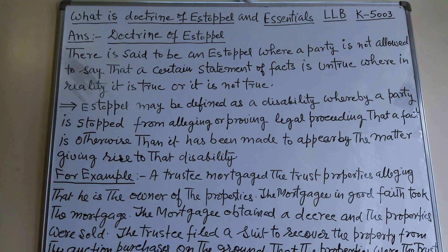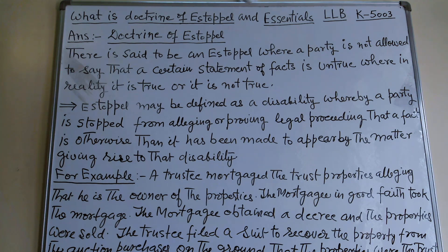The definition of the doctrine of Estoppel: there is said to be an Estoppel where a party is not allowed to say that a certain statement of fact is untrue. Estoppel may be defined as a disability whereby a party is stopped from alleging or proving in legal proceedings that effect is otherwise than it has been made to appear by the matter giving rise to that disability.